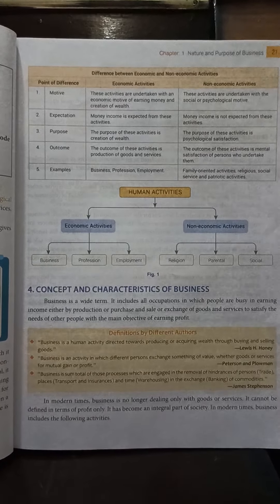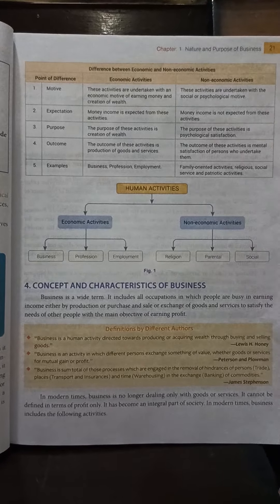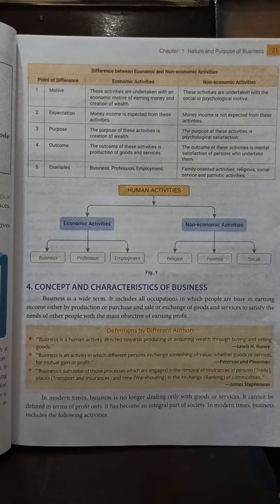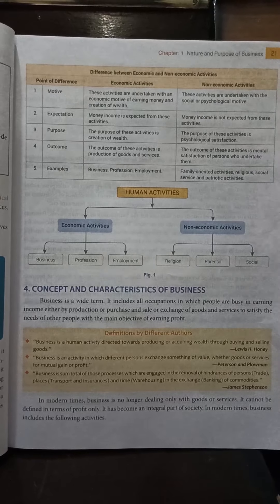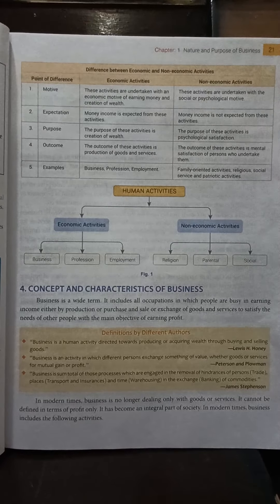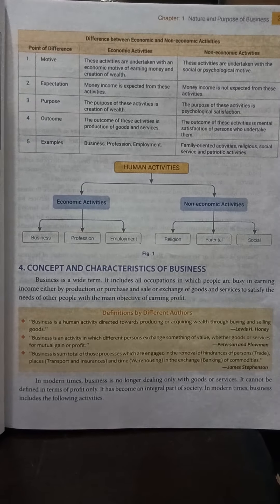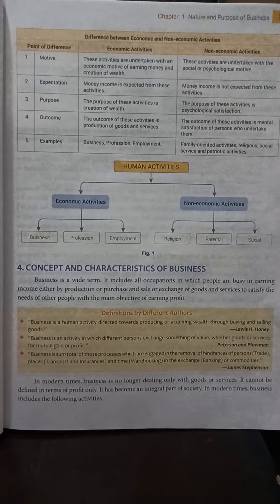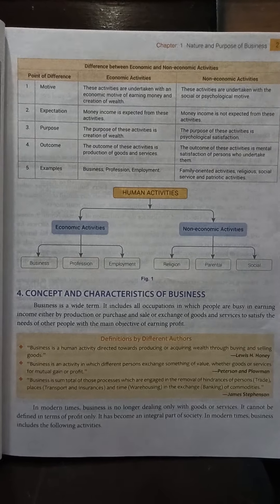We know that business is a part of human economic activity — it is done to earn money. Now we are going to understand the real concept of business, or what really business is. Business is nothing but purchasing and selling goods in order to provide satisfaction to customers and to earn profit out of that process. Business is a human activity directed towards producing or acquiring wealth through buying and selling goods.